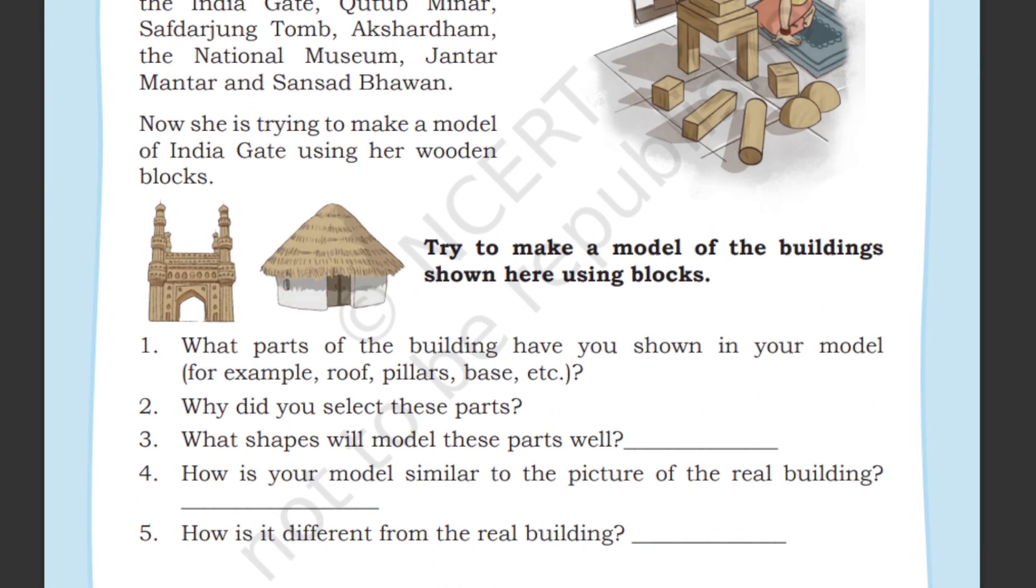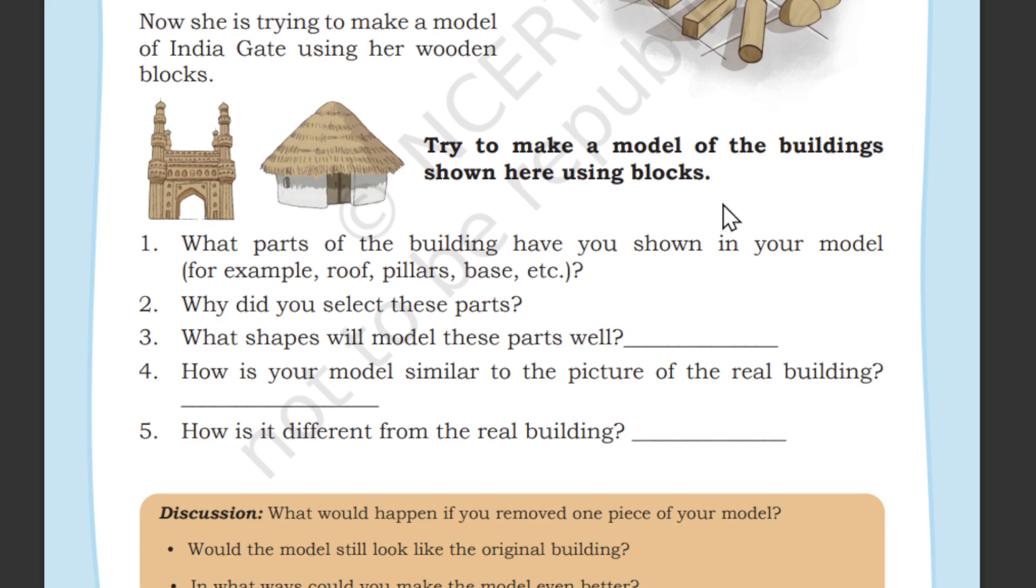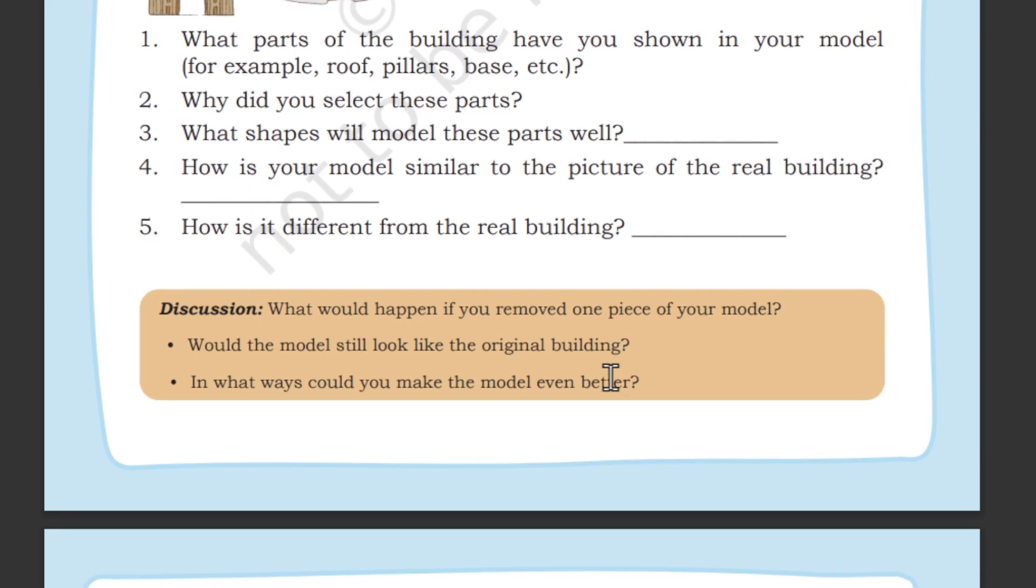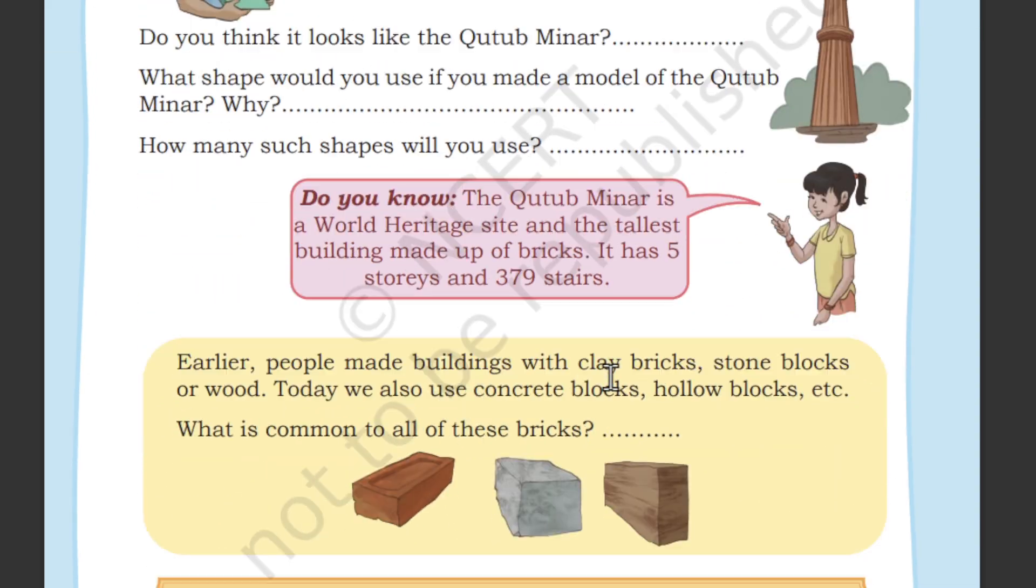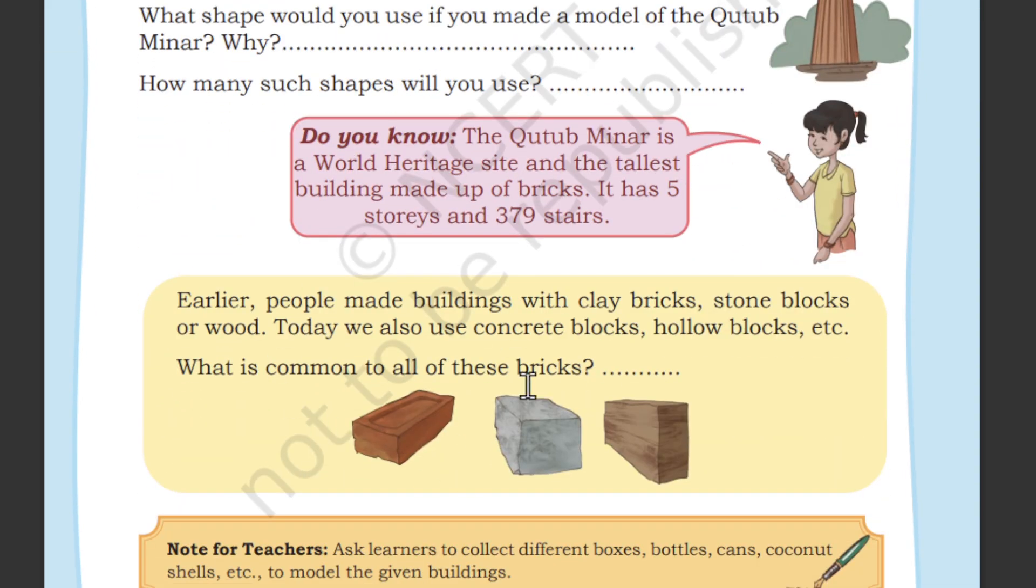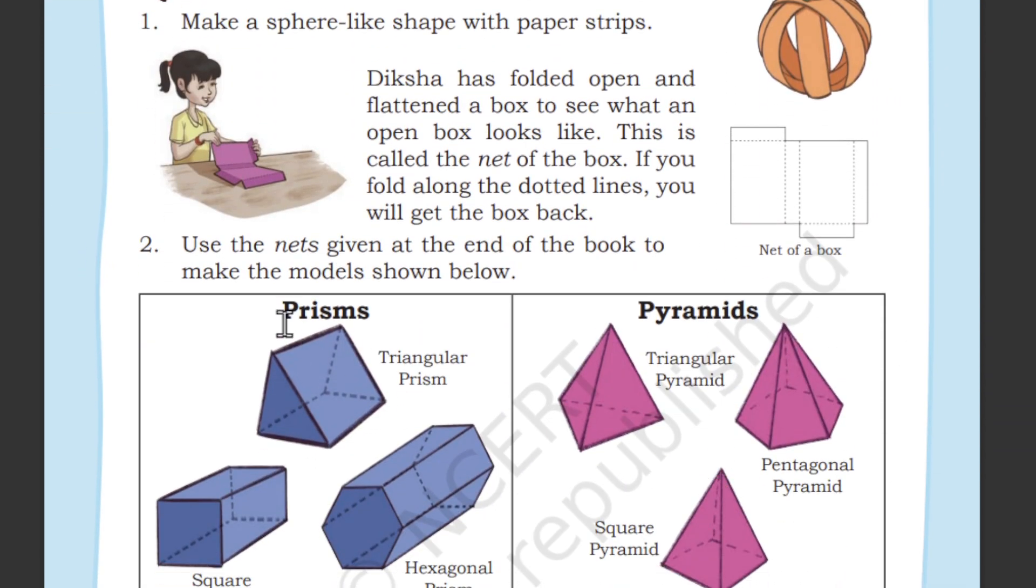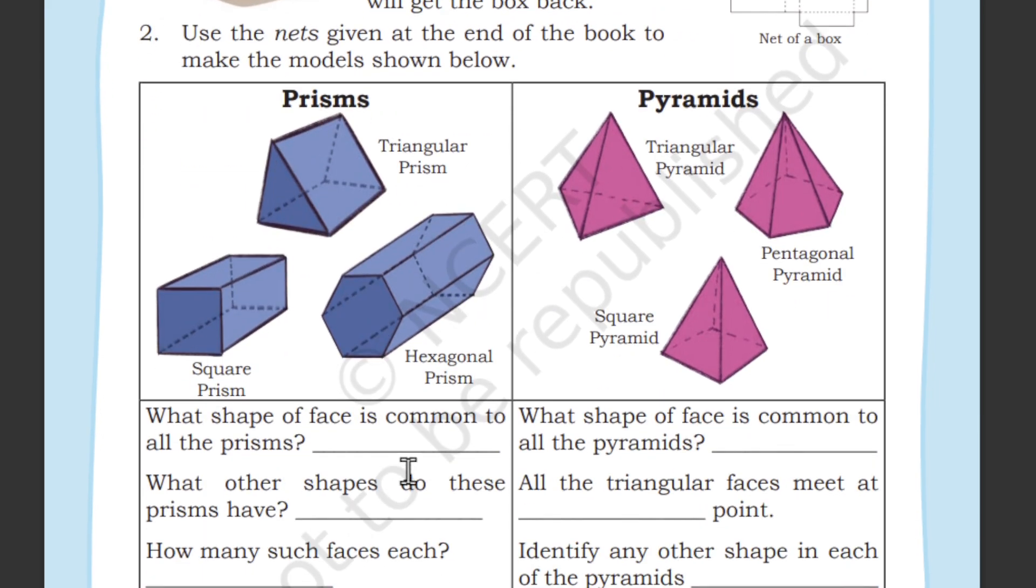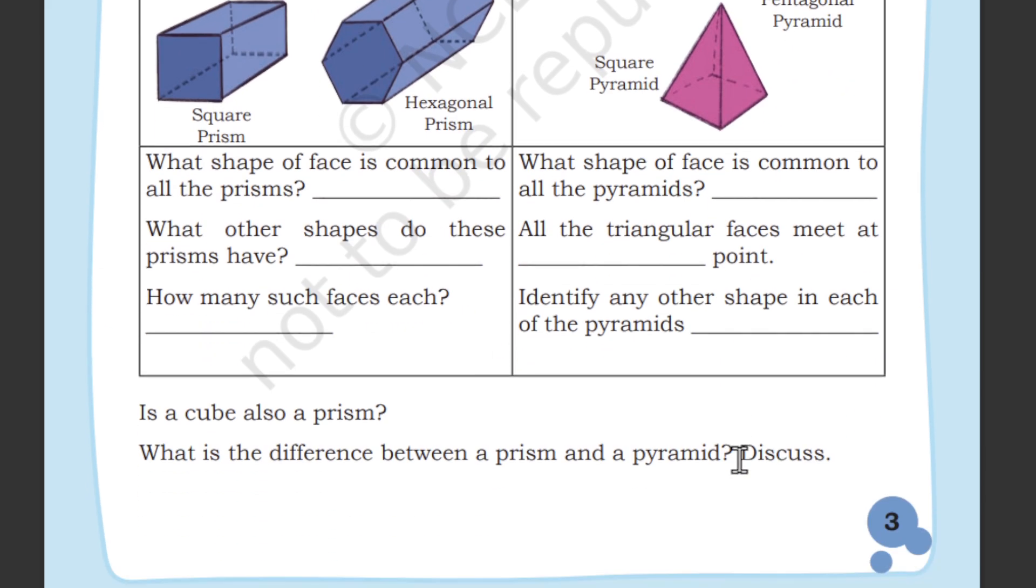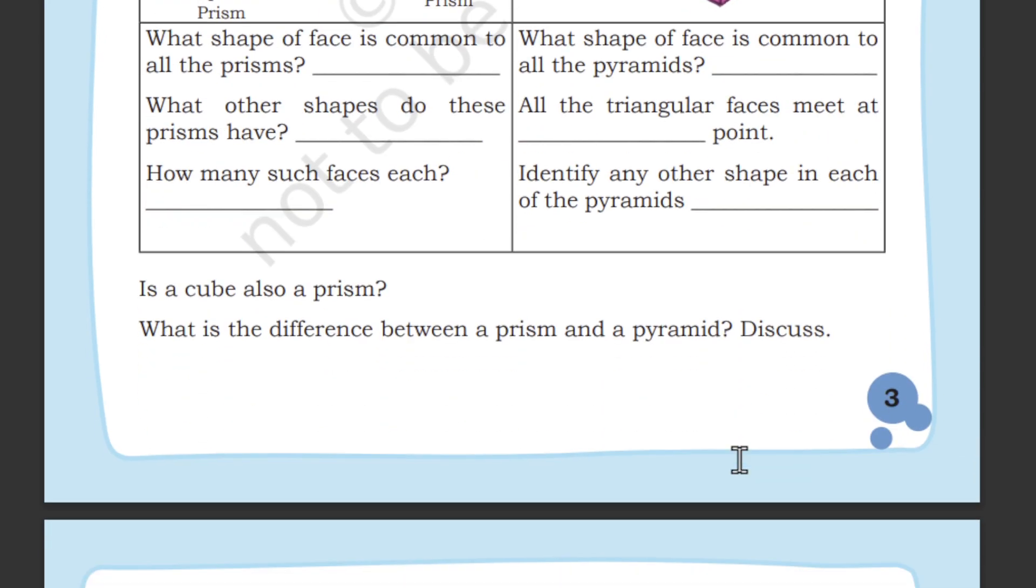We learned about the shapes and what type of models we can make using them. Number of sides, corners, edges, faces. We also learned about prisms and pyramids and the common properties of prisms and all the pyramids, and the difference between prism and pyramids.